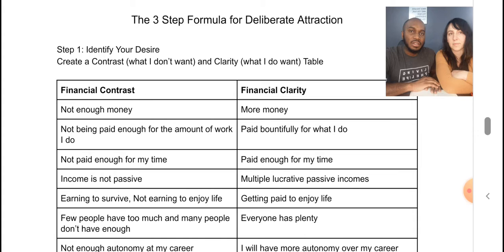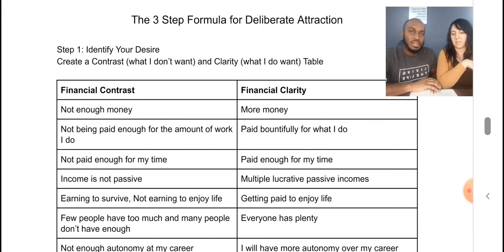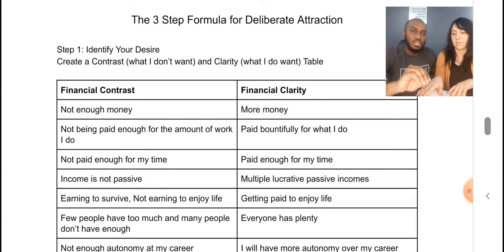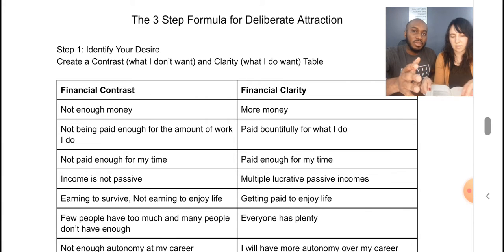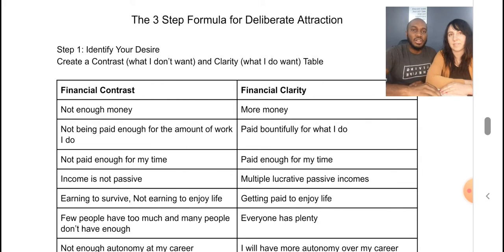Step one is to identify your desire. In this step, what you want to do is create a table with contrast on one side and clarity statements on the other side. In this particular worksheet, we focused on our financial contrast and financial clarity.